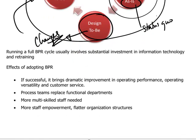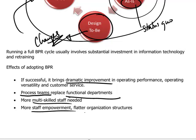If BPR is successfully implemented, it should bring dramatic improvements in the performance of the company. Looking at processes means that teams will be brought together — people from different departments — to ensure the company as a whole is achieving its objectives. This replaces the traditional functional structure. A BPR environment develops multi-skilled staff and delegates greater authority and responsibility to staff at lower levels, resulting in the flattening of organizational structures.